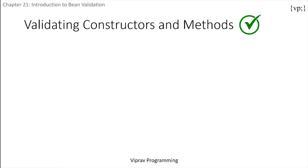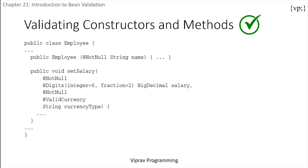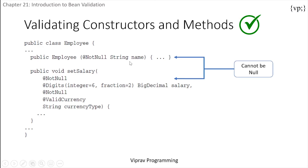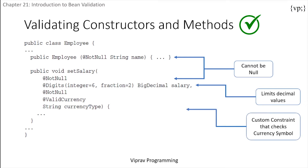To validate constructors and methods: constraints can also be declared on constructors and methods. The constructor is pretty straightforward — the employee's name cannot be null. The set salary method is a little bit more interesting. The salary cannot be null, and it can be greater than six digits to the left and two digits to the right. Then the currency must not be null and is validated using a custom validator called @ValidCurrency.